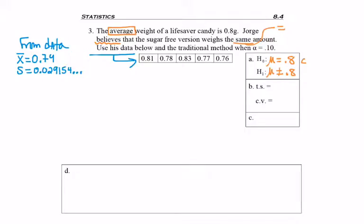The sample standard deviation is 0.029154 and it keeps going on your calculator. Don't forget there's a population standard deviation button, but since this is not all sugar-free Lifesavers in the world, this is only a sample. We have to use the sample standard deviation. And n equals 5.